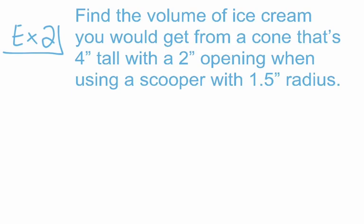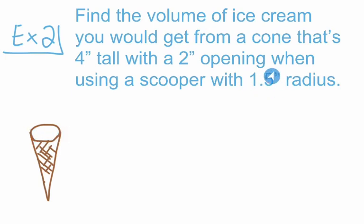If you're having a tough time visualizing that, let's draw a picture. We'll start with our cone, and on top of that we have our ice cream scoop. The opening of the cone is going to be 2 inches across, but our scooper radius is going to be 1.5 inches. So the diameter of the scoop is actually going to be bigger than the opening of the cone, and the scoop of ice cream is going to sit a little bit bigger than the opening. It'll sit right on top of the cone.